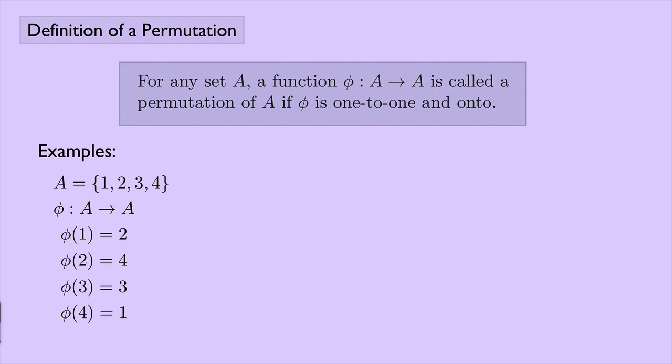But we don't have to look at sets just of four objects. In fact, we don't even have to concentrate on finite sets. We could look at infinite sets. What about the set of integers? And so phi then would be a mapping from the set of integers to itself. And an example could be maybe phi of N equals N plus five. And you could check that this is indeed one-to-one and onto, so it is a permutation.